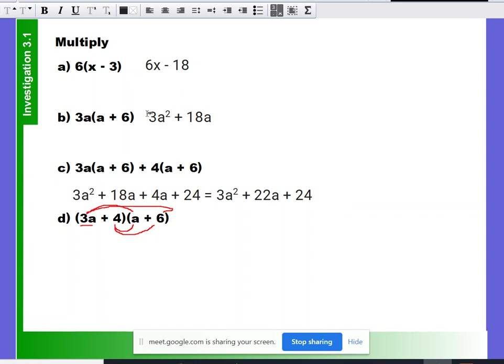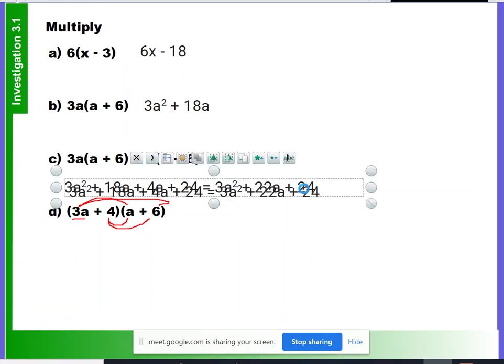18a. Oh, it's the same thing as b, isn't it? Okay. What about 4 times a? 4a. 4a. What about 4 times 6? 24. 24. It's the same as the last one. It is exactly the same as this last one. You are absolutely right.